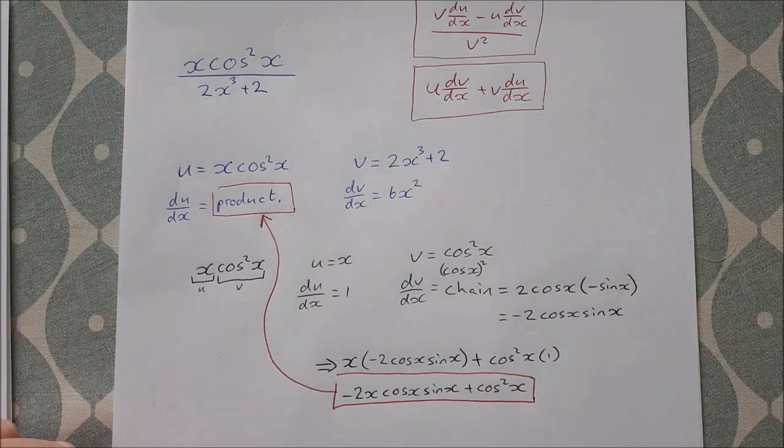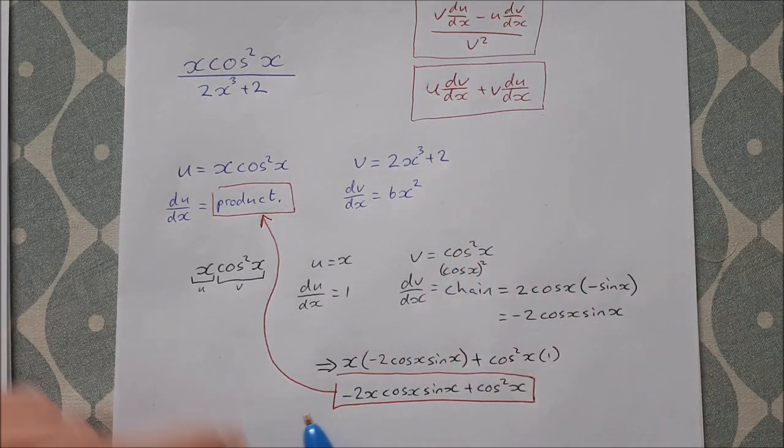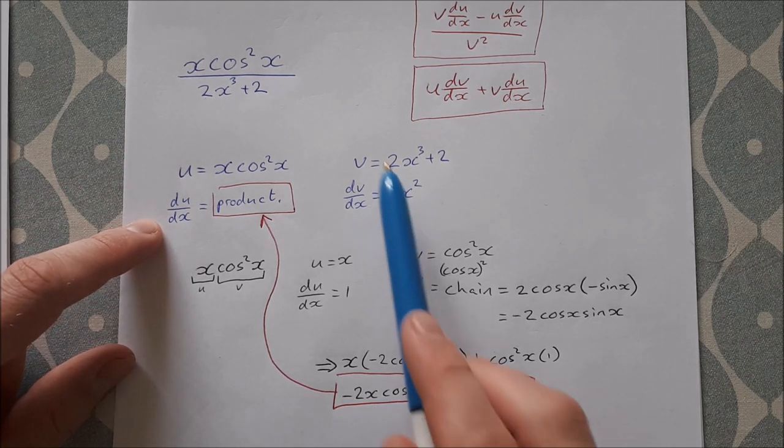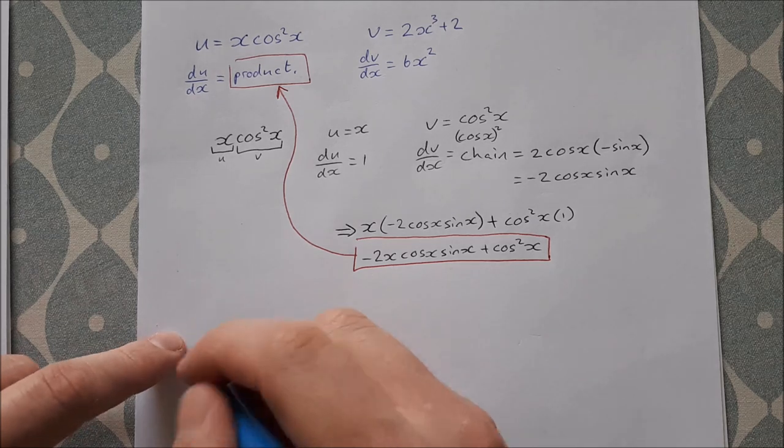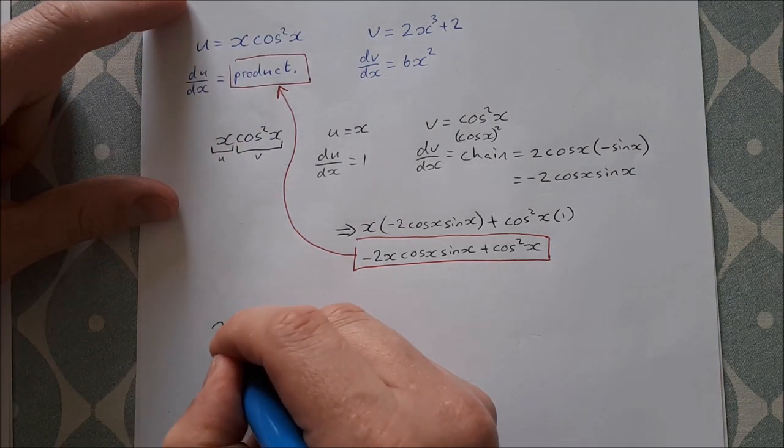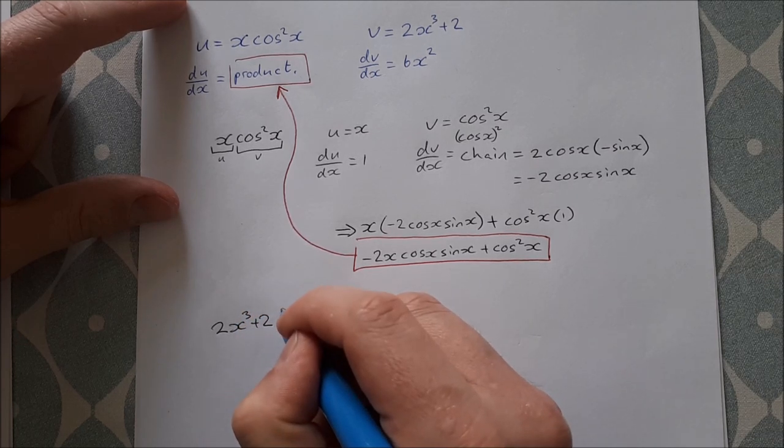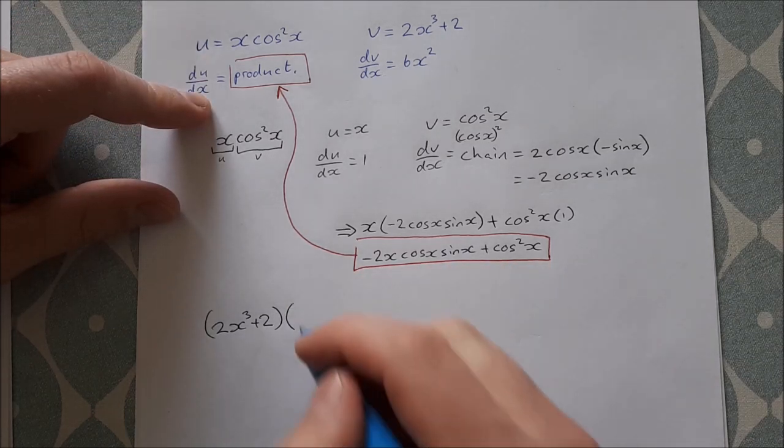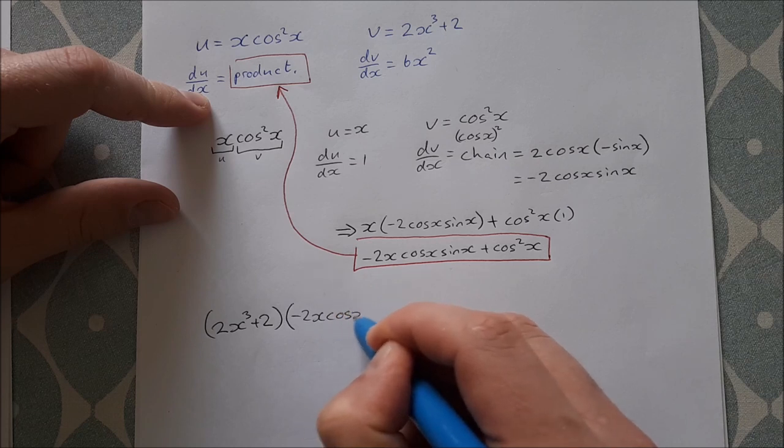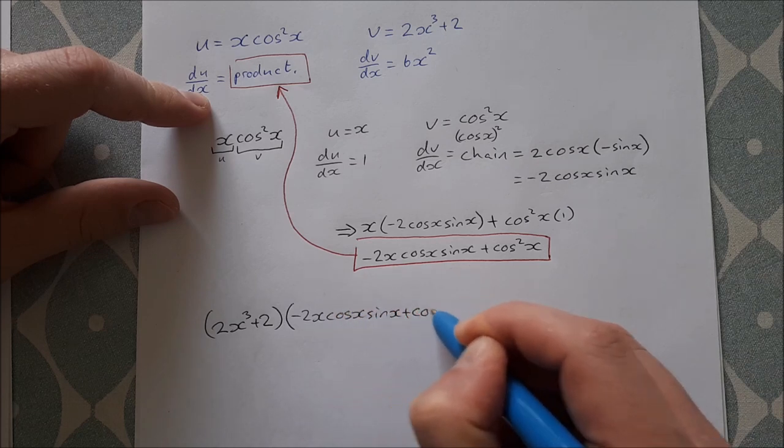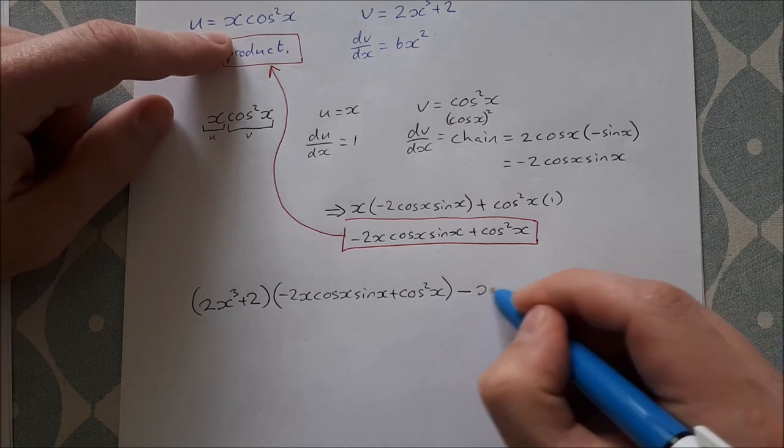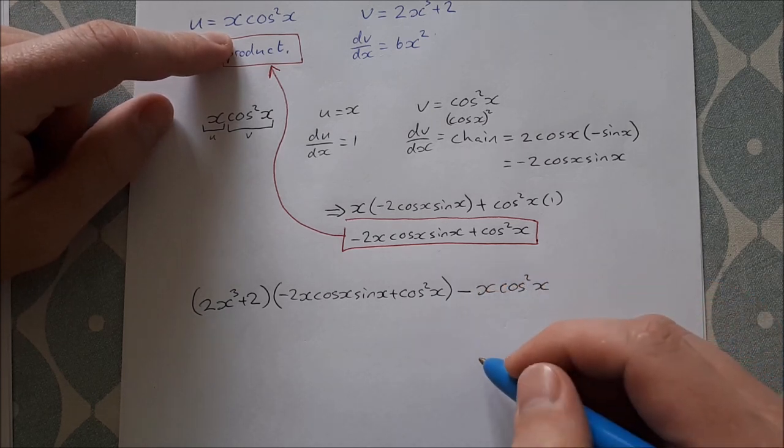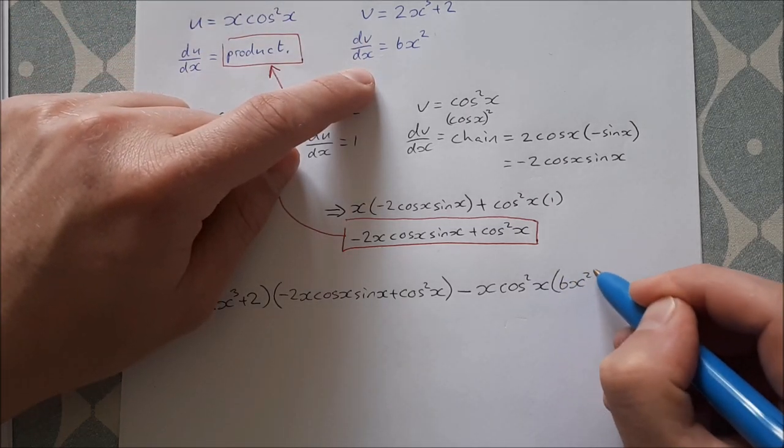So I have my quotient rule here: v du/dx - u dv/dx over v². This is u, this is du/dx, this is v, this is dv/dx. So v du/dx: v is 2x³ + 2 times du/dx, which is this long one here: -2x cos x sin x + cos²x. Then I have minus u dv/dx.